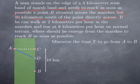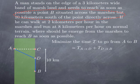So we want to minimize the time to go from A to B. In other words, we want to minimize the sum of the time to go from A to D and the time to go from D to B. Here, D could potentially be equal to C or equal to B.